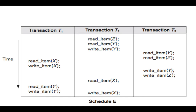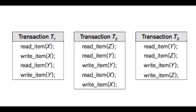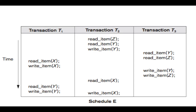If T1 occurs first, then T2, then T3, it is a serial transaction. Now let's look at a non-serial interleaved form of those same transactions. The operations are the same but occurring in an interleaved fashion. Our aim is to check whether this interleaved schedule of three transactions is serializable.